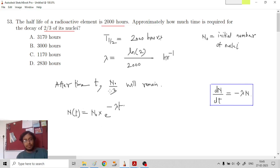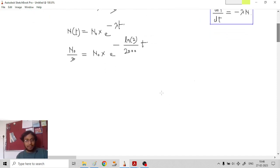But what is N of t now? N_0 by 3. We need to determine the time. That will be N_0 into e to the power negative lambda. Lambda is how much? ln 2 upon 2000 into t. N_0 will go. Now this is 1 upon 3.